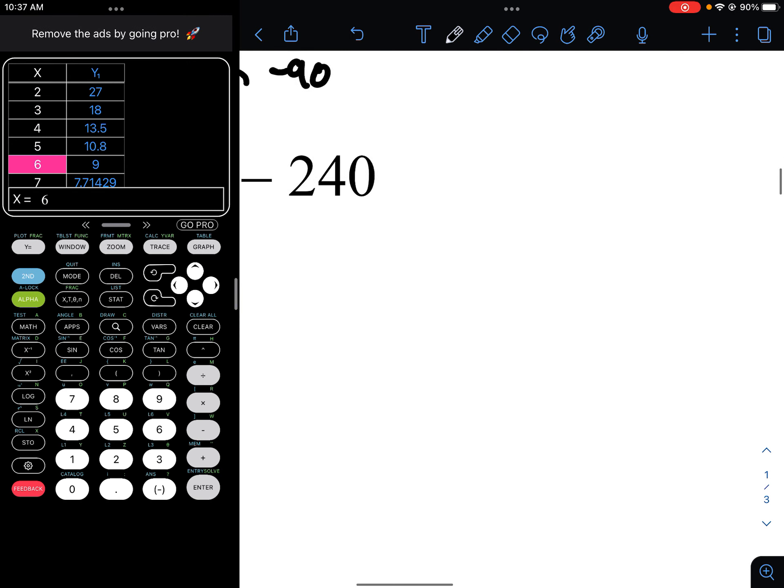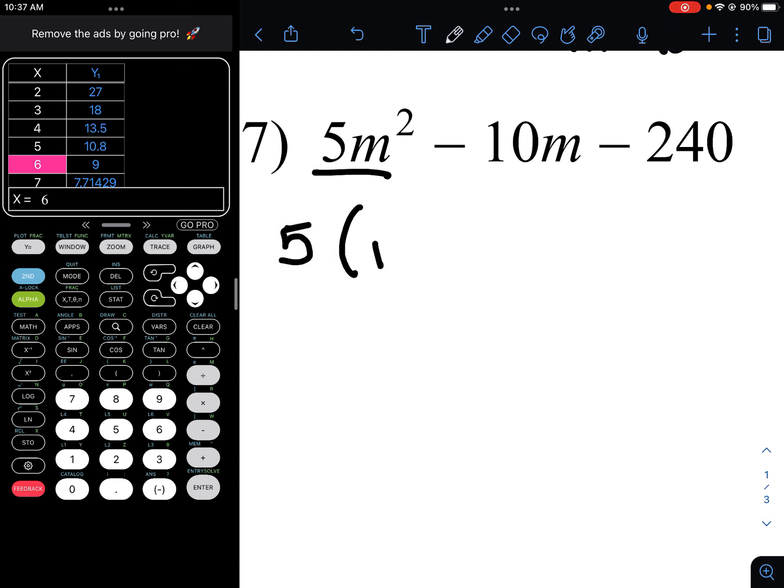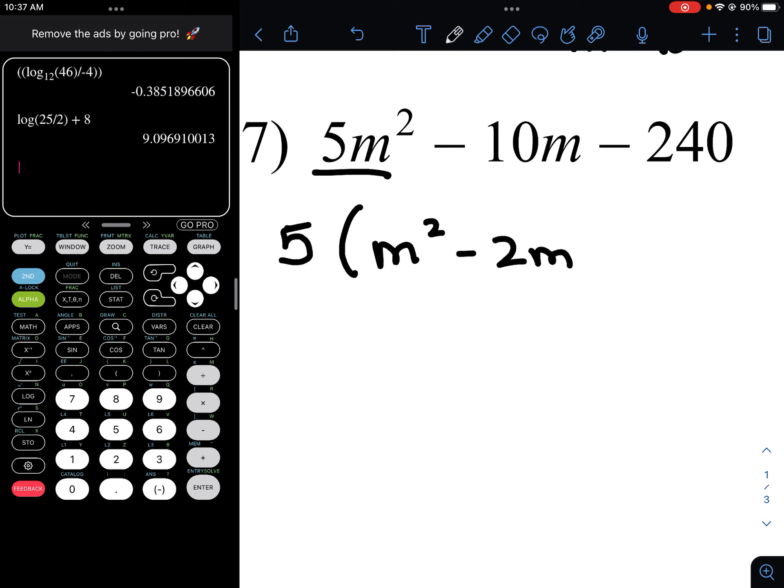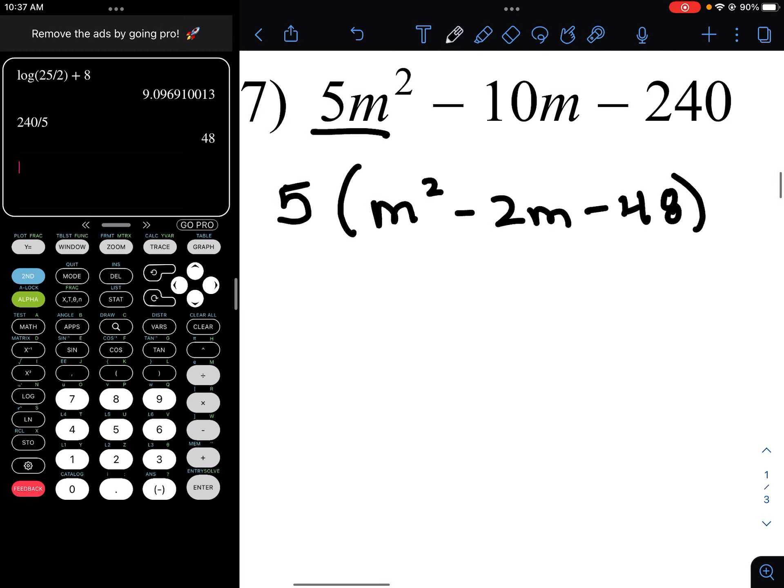Let's look at a few more. These are going to take some practice. So first step, we see 5, negative 10, and negative 240. Chances are it's a GCF. You can bring that out. 5 m squared minus 2m. 240 divided by 5 is 48. And in this case, we need factors of 48. So y equals 48 divided by x.